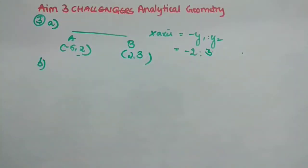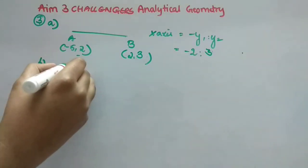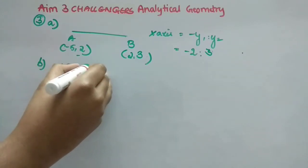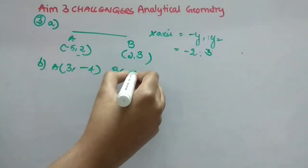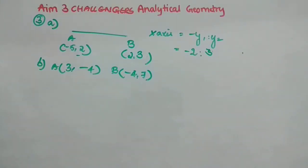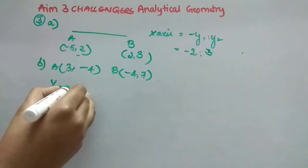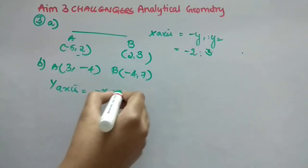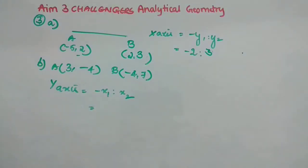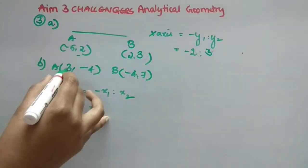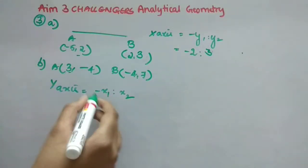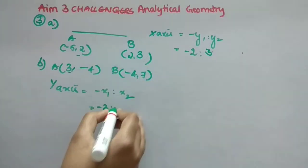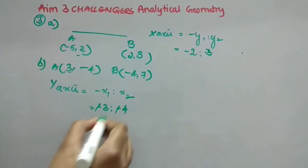Now B1, we will see. So B1, I am not drawing the diagram. Same thing. Ratio, they have given us. They have given the points. A is 3 comma minus 4, and B is minus 4 comma 7. Here, it is just y-axis. So y-axis means, the formula is minus x1 is to x2. So what we will put minus x1 means, here x1 is this. So minus 3 is to x2 is minus 4. So minus minus cancel. So 3 is to 4. Clear? Now we will see fourth question. Third one is very simple.